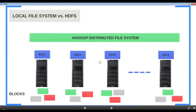By default, HDFS replicates each block to three nodes. For example, if you copy a 700 MB dataset into HDFS, it will be divided into five 128 MB blocks and one 60 MB block — totaling 700 MB. Since HDFS has a distributed view of the cluster, it decides which nodes hold these six blocks and which nodes hold the replicated copies. HDFS continuously tracks all blocks and their node assignments, so when a user requests the 700 MB dataset, it knows how to reconstruct it.